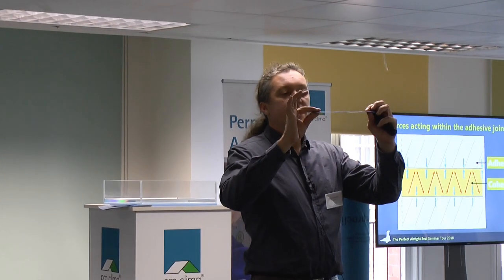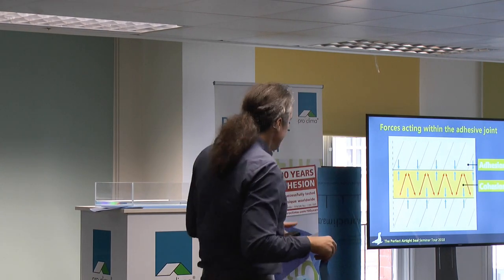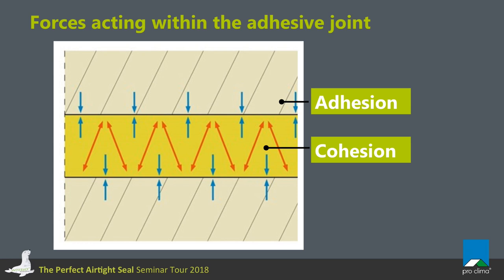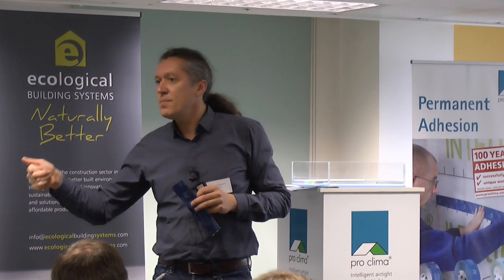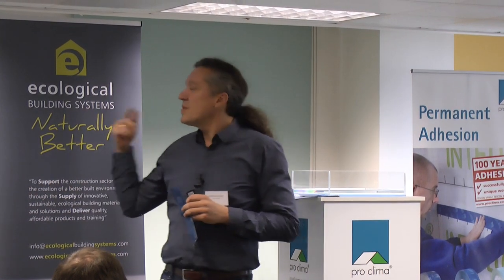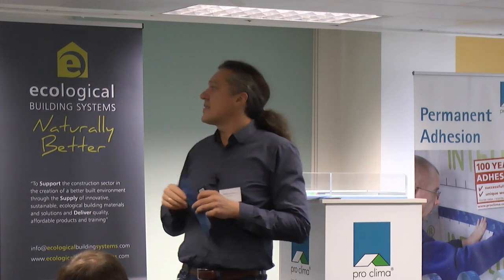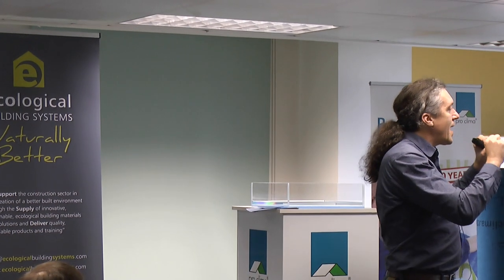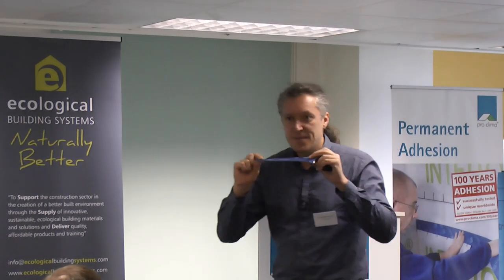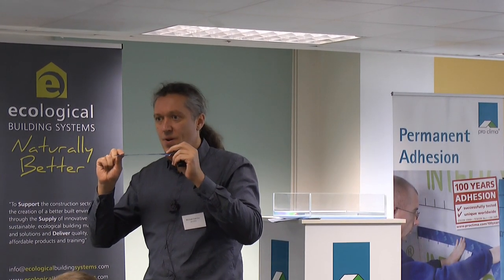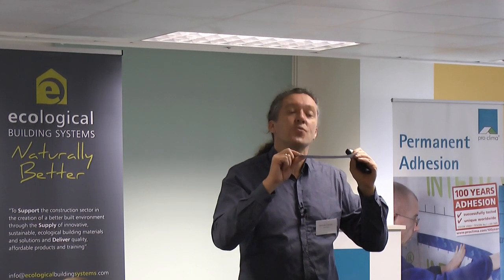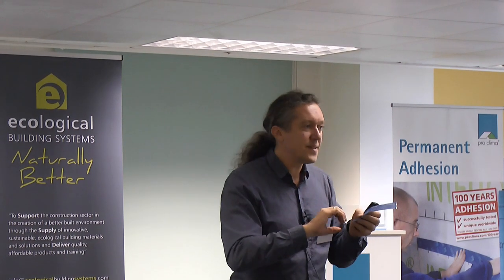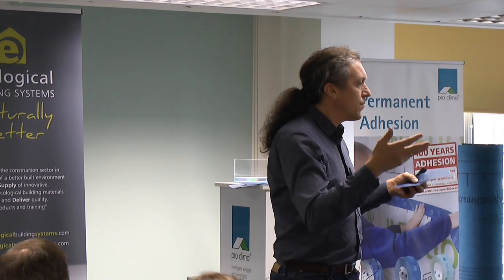If we consider our tape, we have the backing — the blue one — and the thin layer. Both forces that I've described with the honey and the stone are working within this thin glue layer. The cohesion is working in the layer, and the adhesion is working between the backing and the glue, and between the substrate and the glue. The substrate could be a wood fiber board, a PE foil, or even mineral surfaces. When developing a tape, we have to find the best combination between adhesion and cohesion, because we want it to stick on nearly every surface and carry high loads — for instance, so overlappings don't open themselves under the weight of insulation material.